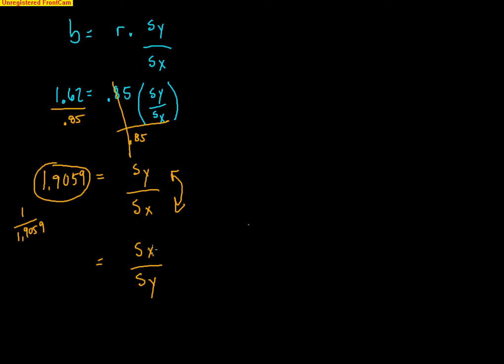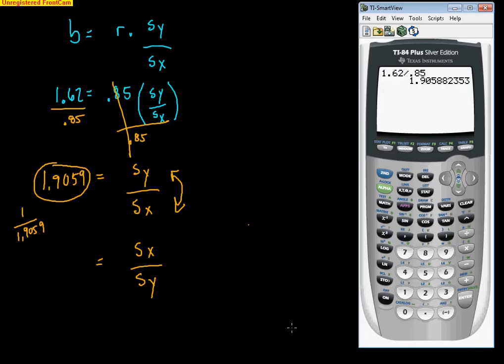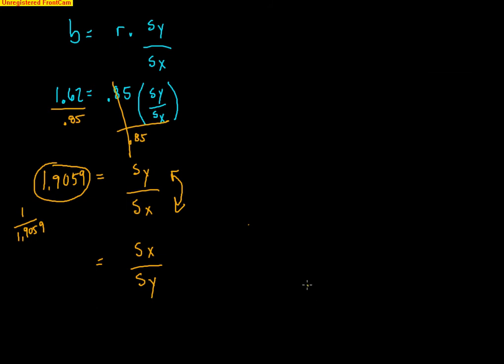It's literally just going to take that number and switch it. So if you want to switch, flip-flop the standard deviations, I have to take that value, 1.9059, and flip-flop it. So 1 divided by 1.9059, and I get 0.5247.